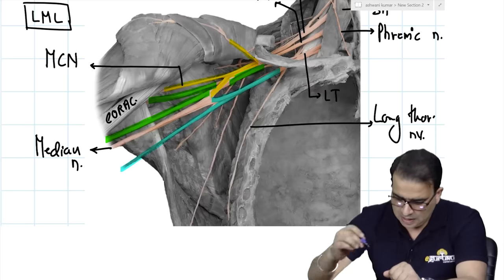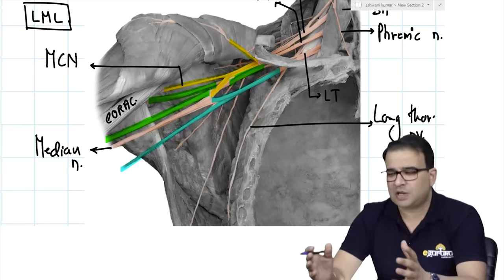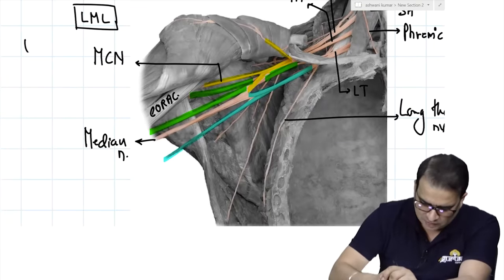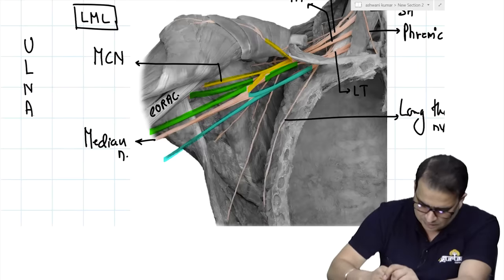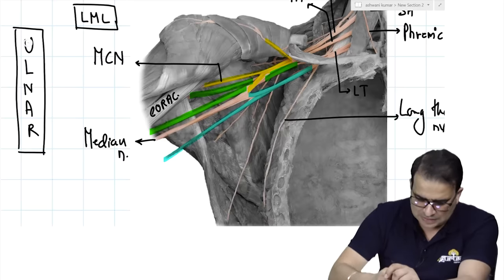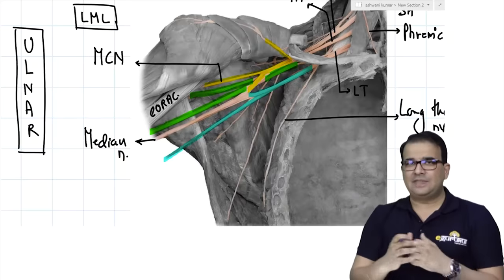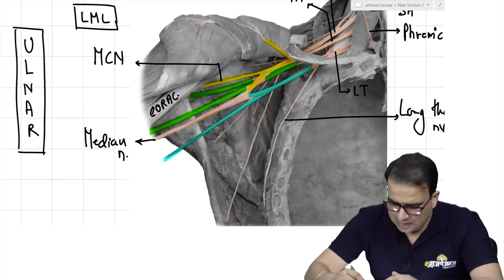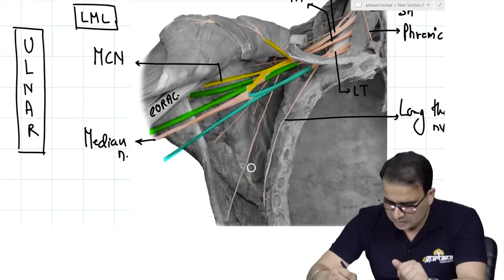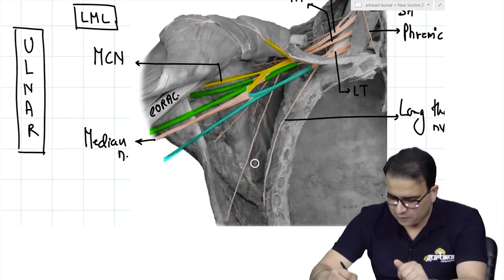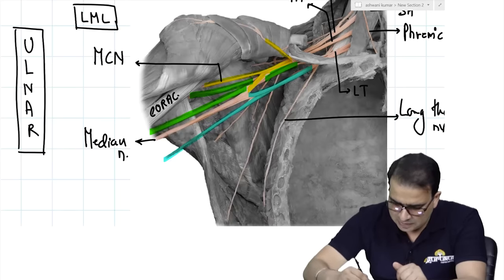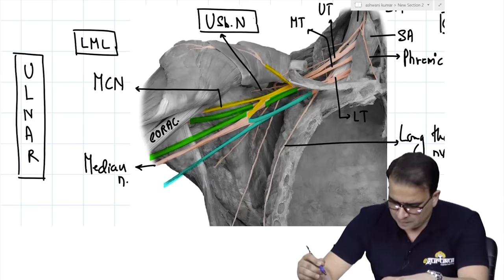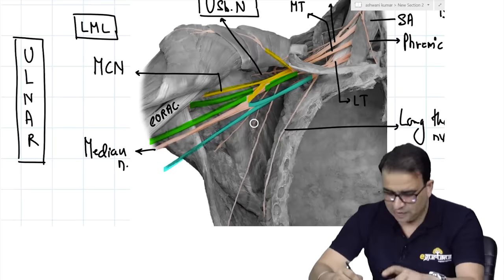Looking at the posterior cord of brachial plexus: its major branches are the upper subscapular nerve, lower subscapular nerve, nerve to latissimus dorsi, axillary nerve, and radial nerve — remembered by the mnemonic ULNAR (or lunar). The subscapularis muscle is a large muscle forming the posterior axillary fold. The upper subscapular nerve supplies subscapularis. The lower subscapular nerve supplies subscapularis and also the teres major muscle.